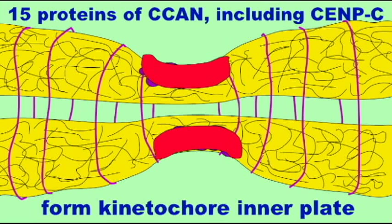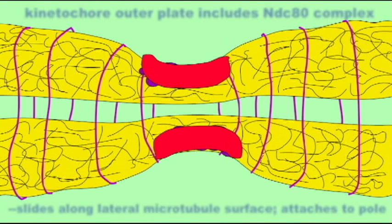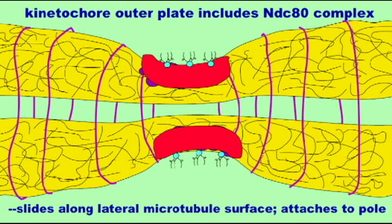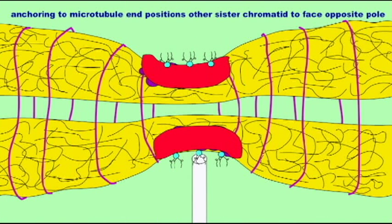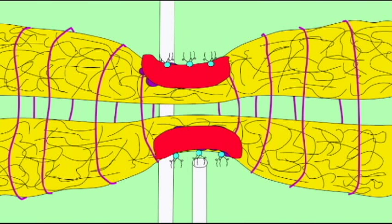This is a complex which will attach to microtubules and allow for movement along the lateral surface. The kinetochore slides along the lateral surface of a microtubule as it moves towards the pole.